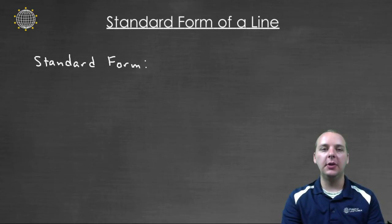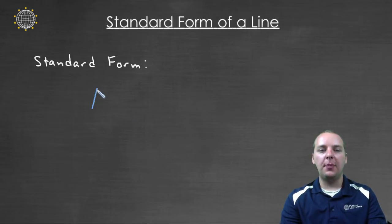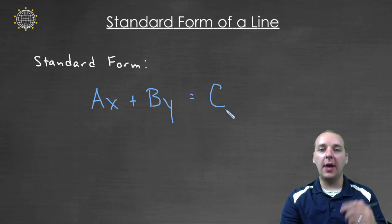That's what we're going to talk about in this video. So standard form looks like this, you've got capital AX plus capital BY equals capital C, where capital A, B, and C will be numerical values.